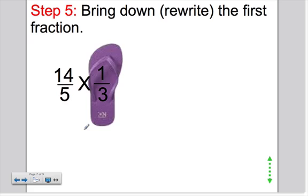Step number 5 says bring down or rewrite the first fraction. The way I just showed you now, there's no need to bring it down. But what I mean by this is if I had started from the beginning, 2 and 4 fifths, divided by the whole number 3.